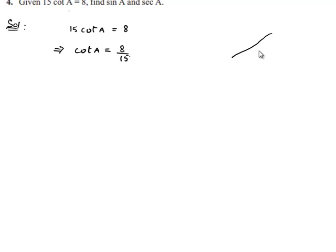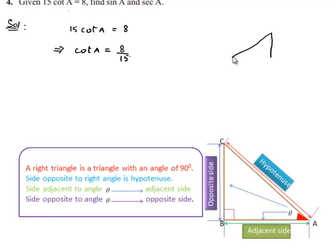Let us assume a right angle triangle with A as base angle, B being 90 degrees, and C being the other vertex of the triangle ABC. In this, he has given that cot A is equal to 8 by 15.